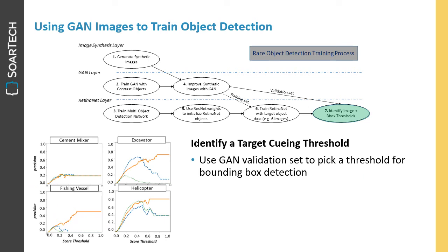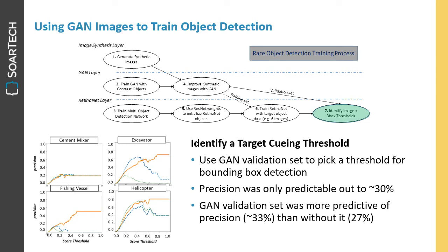GAN images can also be used as a validation set to identify a target cueing threshold. In this case, the GAN validation set picks a threshold for bounding box detection. However, precision was only predictable out to about 30%. But the GAN validation, as with the image filtering threshold, remained better than synthetic images and more predictive of precision than without it.